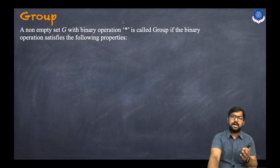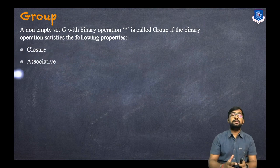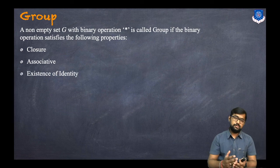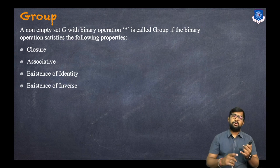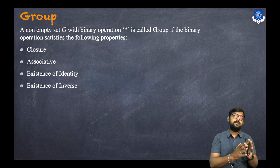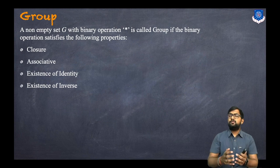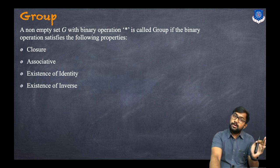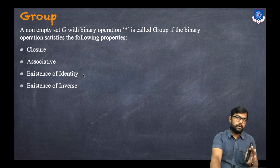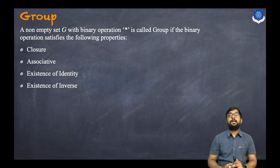The fourth one is the group. A non-empty set G with the binary operation star is called a group if it satisfies the closure property, associative property, existence of identity, and existence of inverse. If a group also has the commutative property, then it is called an abelian group. So an abelian group satisfies closure, associative, identity, inverse, and commutative.